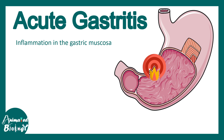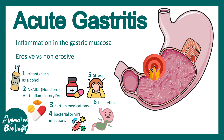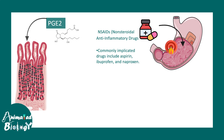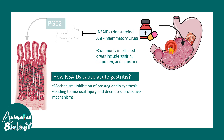Acute gastritis means inflammation of the gastric mucosa which occurs suddenly — it could be erosive or non-erosive. One of the major triggers is non-steroidal anti-inflammatory drugs such as aspirin, ibuprofen, and naproxen. The gastric lining is protected by prostaglandins, especially prostaglandin E2. NSAIDs prevent prostaglandin synthesis, thereby turning off the protective mechanism, causing the gastric lining to start getting damaged — leading to mucosal injury and decreased protective function.